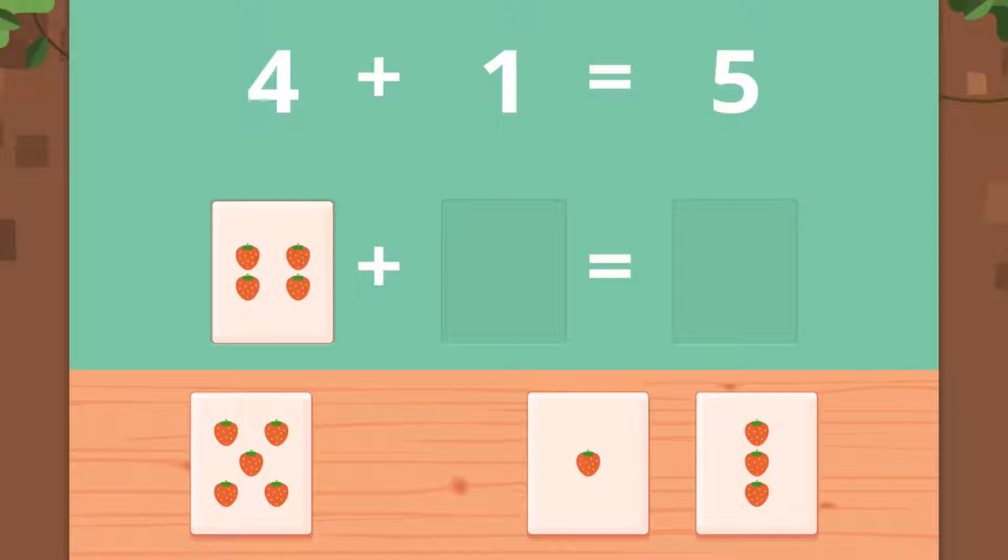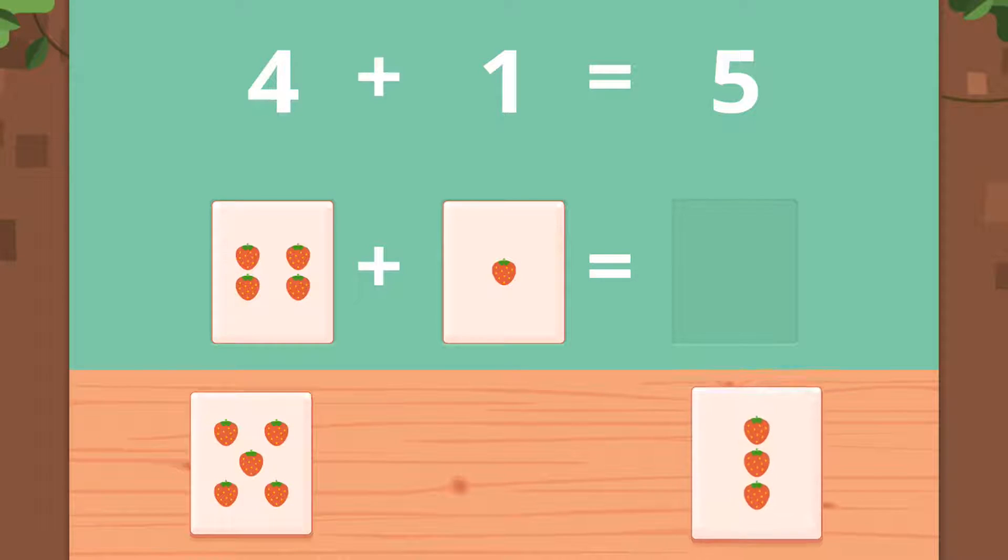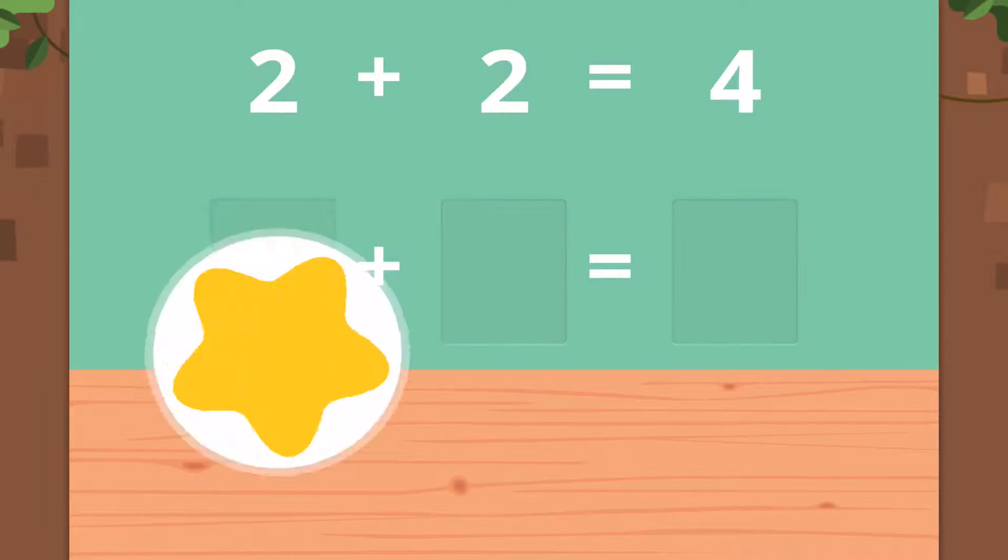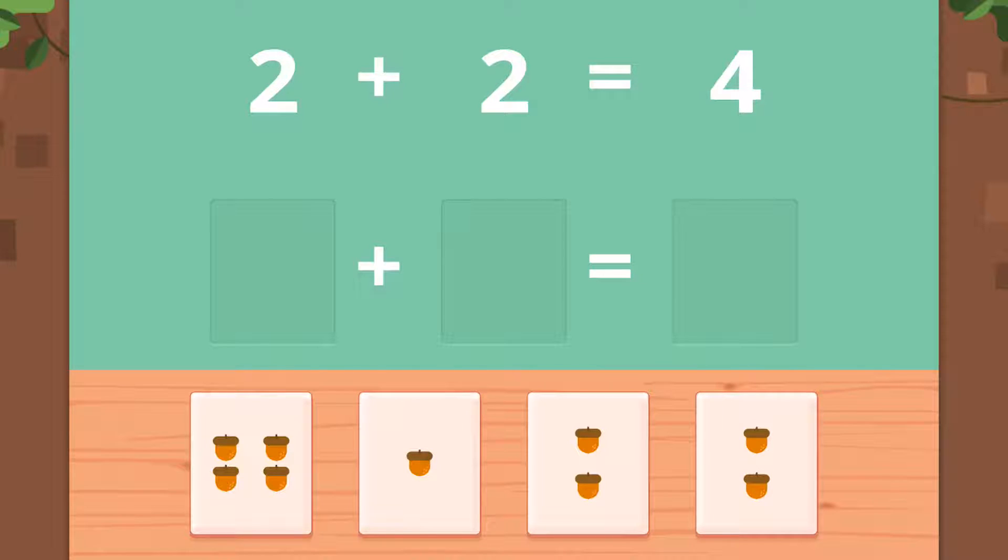Four plus one equals not three, five. Four plus one equals five. Perfect. Now here we have two plus two equals four.